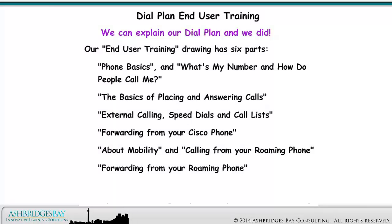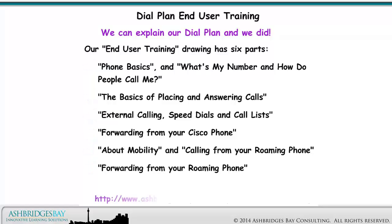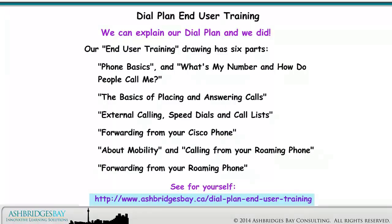Our end user training drawing has six parts: phone basics and what's my number, and how do people call me; the basics of placing and answering calls; external calling, speed dials, and call lists; forwarding from your Cisco phone; and about mobility and calling from your roaming phone, and forwarding from your roaming phone. See for yourself at our website.